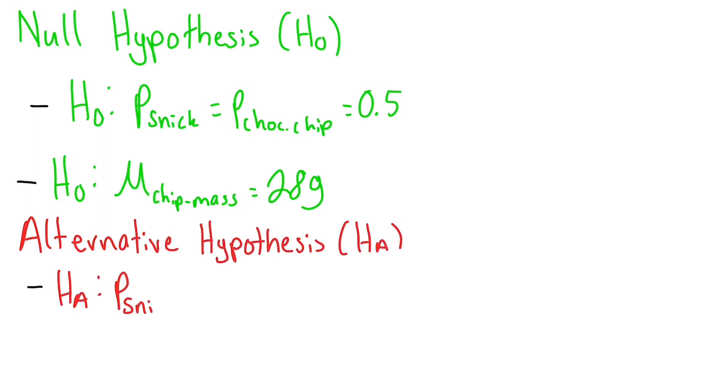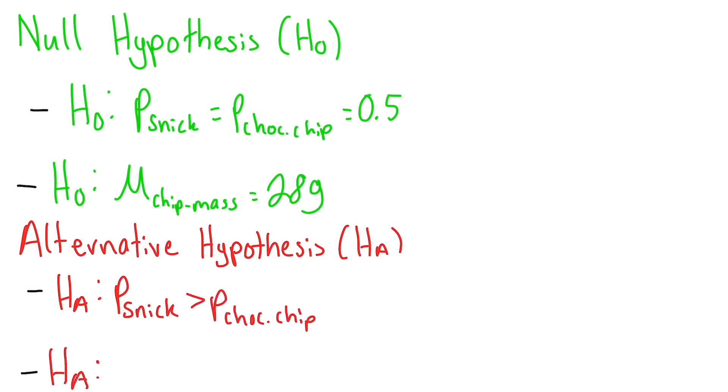It can look something like, the chance of getting a snickerdoodle cookie is higher than the chance of getting a chocolate chip cookie. Or the mean value of the chip mass in the bag is less than 28 grams.